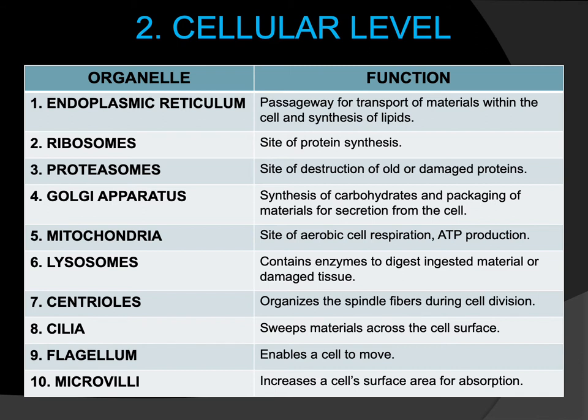Inside the cytoplasm are organelles that perform specific functions. These organelles are important because they are different sites of nutrient synthesis — such as carbohydrates, fats, and proteins. Some organelles are important for transport, others for movement, and others for improving absorption.